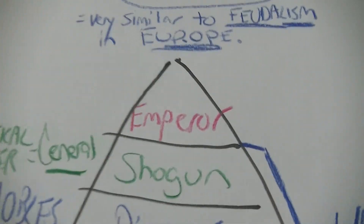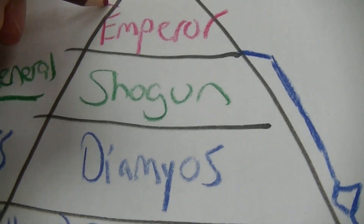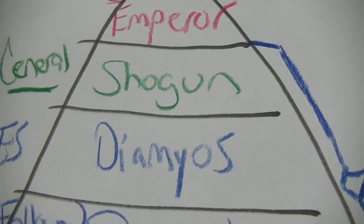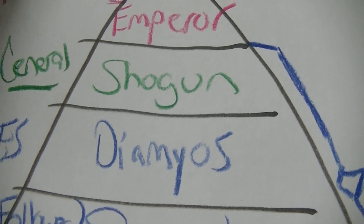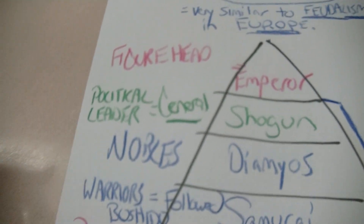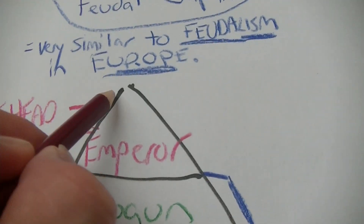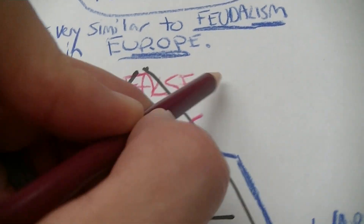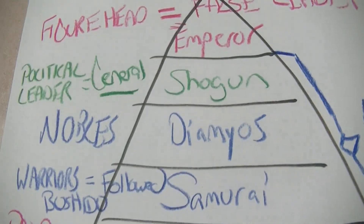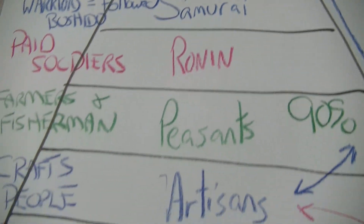What happens on the battlefield depends on the time period. The only person that might be above the shogun is the emperor, but most of the time the emperor is just a figurehead — basically a false leader. So your real leader is the shogun, then the daimyo, then the samurai, working its way all the way down.